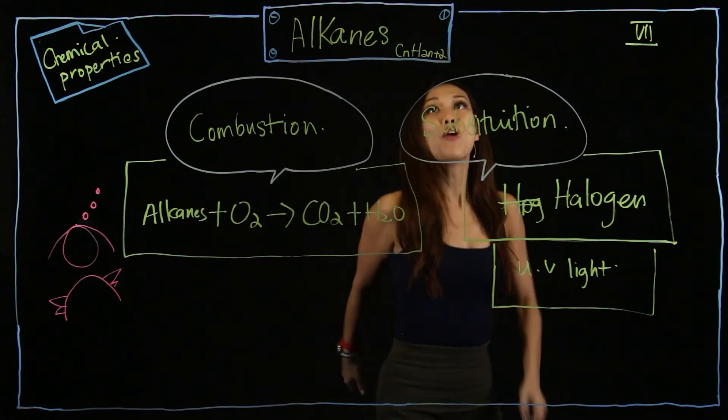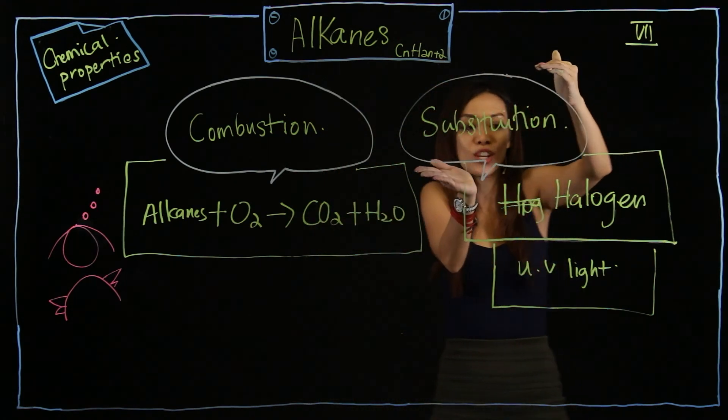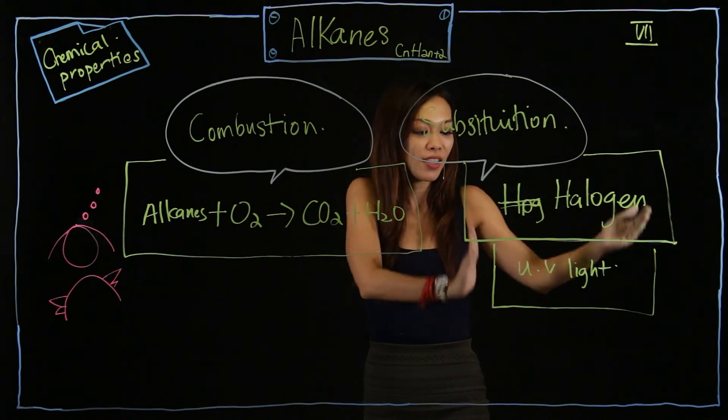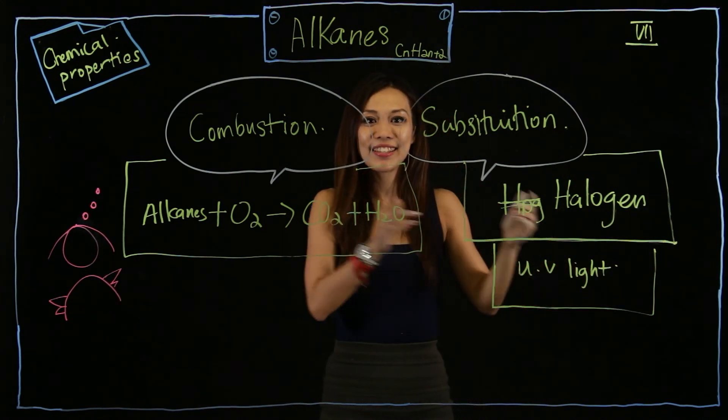And, the product is always carbon dioxide and water. But, for alkanes, they will go through this process called substitution. And, only with halogen and UV light is required. Did you get that?